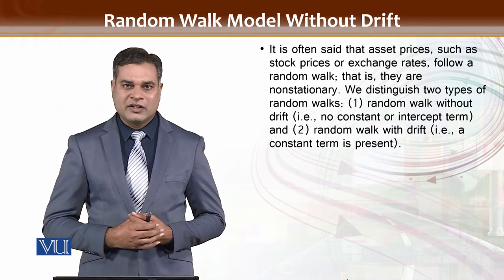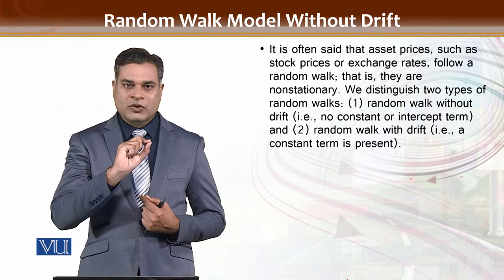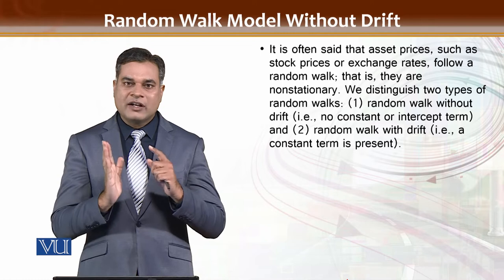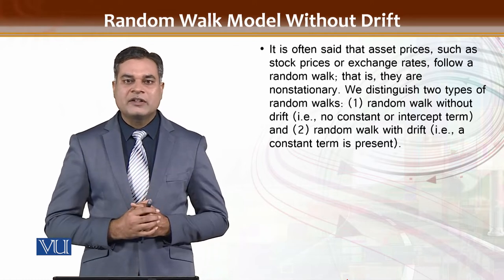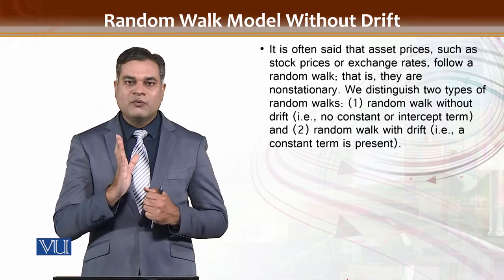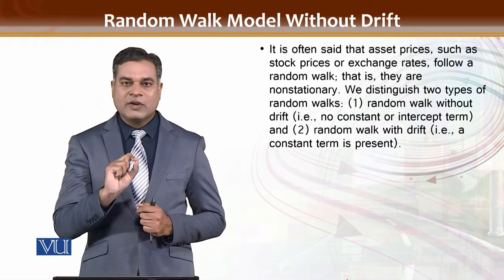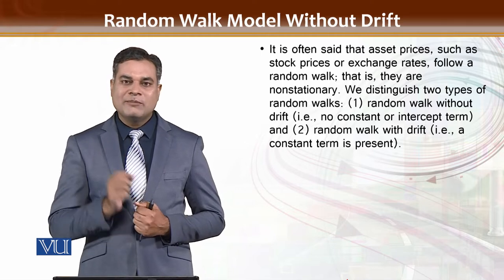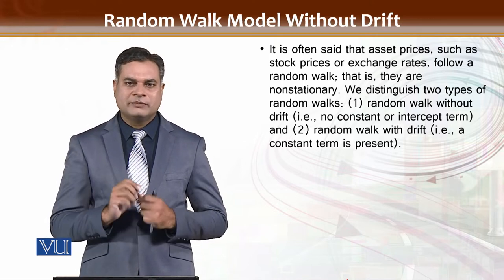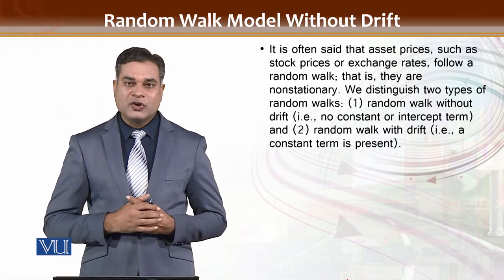If you consider exchange rates or the stock market, you know that those values follow a random walk — they are random and we cannot predict them. When predicting stock markets, we don't know whether the next value will increase or decrease. If we could predict it, everyone would go from millions to billions, and billions to trillions. In financial econometrics, most series cannot be predicted because their trend is a random number.